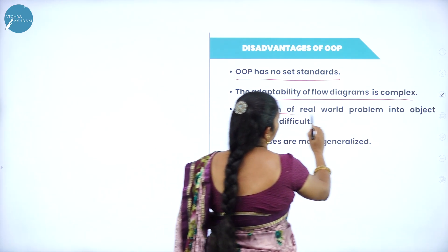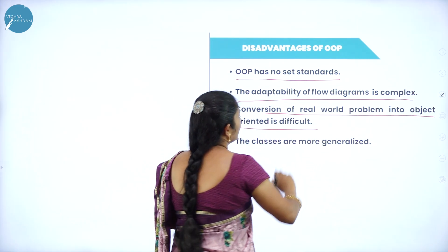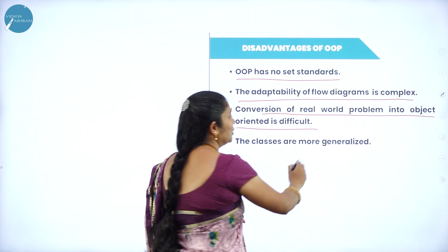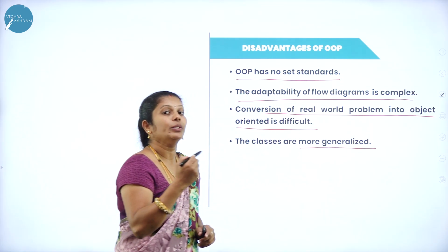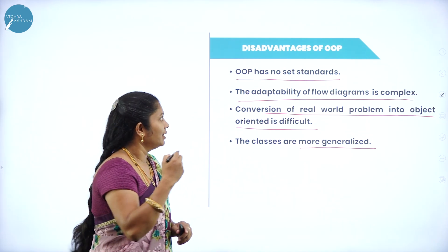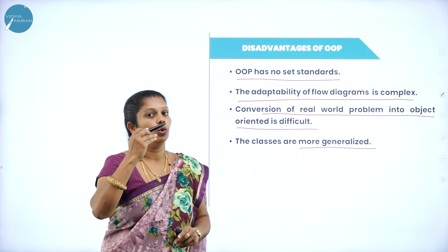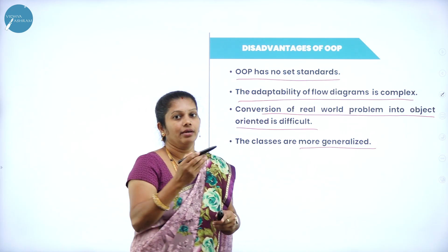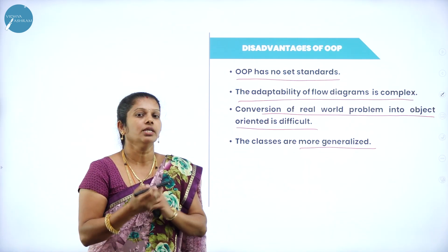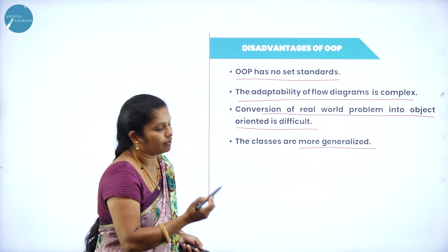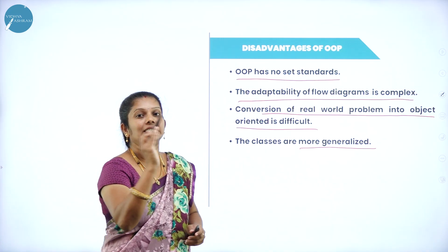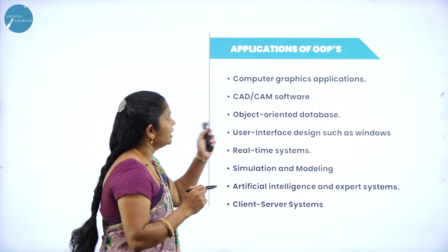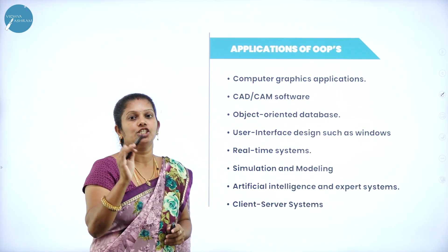The conversion of a real world problem into object oriented is very difficult. Classes are also more generalized. These are the few disadvantages of Hoops.